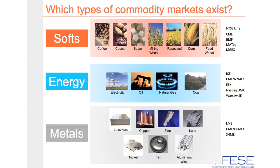We have the energy family, where we have electricity, oil, natural gas, and coal. And then last but not least, we have the metal family, which has aluminium, copper, lead, nickel, tin, and so on.